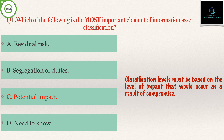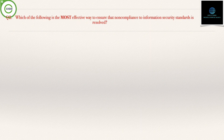Option B, segregation of duties, is also incorrect because segregation of duties is a control unrelated to asset classification. Option D, need to know, is also incorrect because need to know is a control only indirectly related to asset classification. Therefore, potential impact is the most important element, and option C is correct.